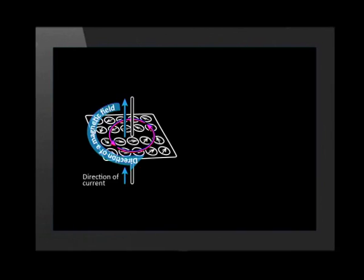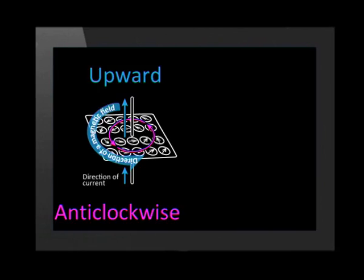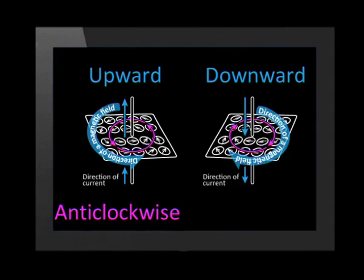The magnetic field changes direction each time the current changes direction. If the current is upward, the field is anti-clockwise around the wire. If the current is downward, the field goes clockwise around the wire.